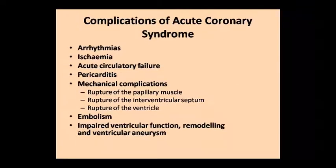Complications of acute coronary syndrome include: ischemia, acute circulatory failure, pericardial inflammation, and mechanical complications such as papillary muscle rupture, ventricular septum rupture, and ventricular rupture. Other complications include embolism, thrombus formation, impaired ventricular function, remodeling, ventricular aneurysm, aneurysm dilation of the artery wall.